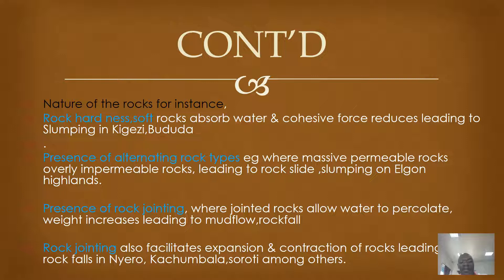The other one is the presence of alternating rock types. For example, we have massive permeable rocks overlying impermeable rocks. Water enters through the permeable rocks, and after absorbing water, they slide over the impermeable rocks in the form of rock slide and in the form of slumping. These are evident on the slopes of Mount Elgon.